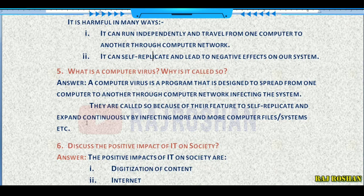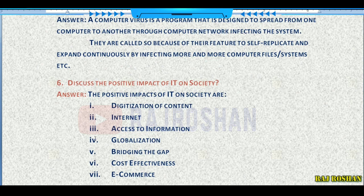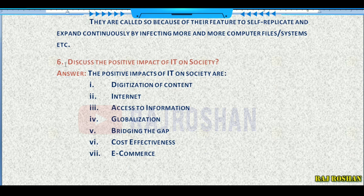What is a computer virus and why is it called so? A computer virus is a program designed to spread from one computer to another through a computer network, infecting the system. They are called viruses because of their features to self-replicate and expand continuously by infecting more and more computer systems.